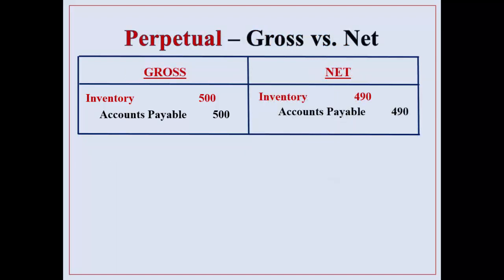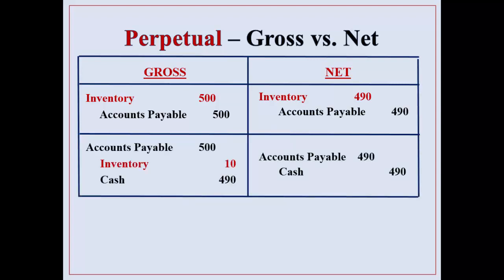Gross versus net with perpetual. Using the gross method, you record the full amount of $500 and then when they paid within the discount you record the reduction. Using the net method you're assuming they will pay within the discount period, so you record the inventory at its net amount. If they do pay within the discount period, here are your entries for the gross method and the net method.